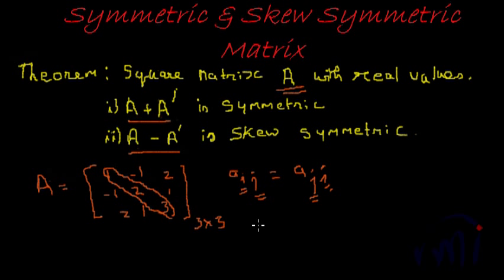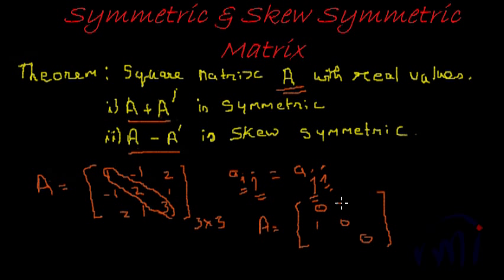Now, a skew symmetric matrix will look like this. A skew symmetric matrix will always have zeros on the diagonal, and the element on one side will be the negative of the element on the other side — a mirror image but with a negative sign. So, this is what a skew symmetric matrix looks like.